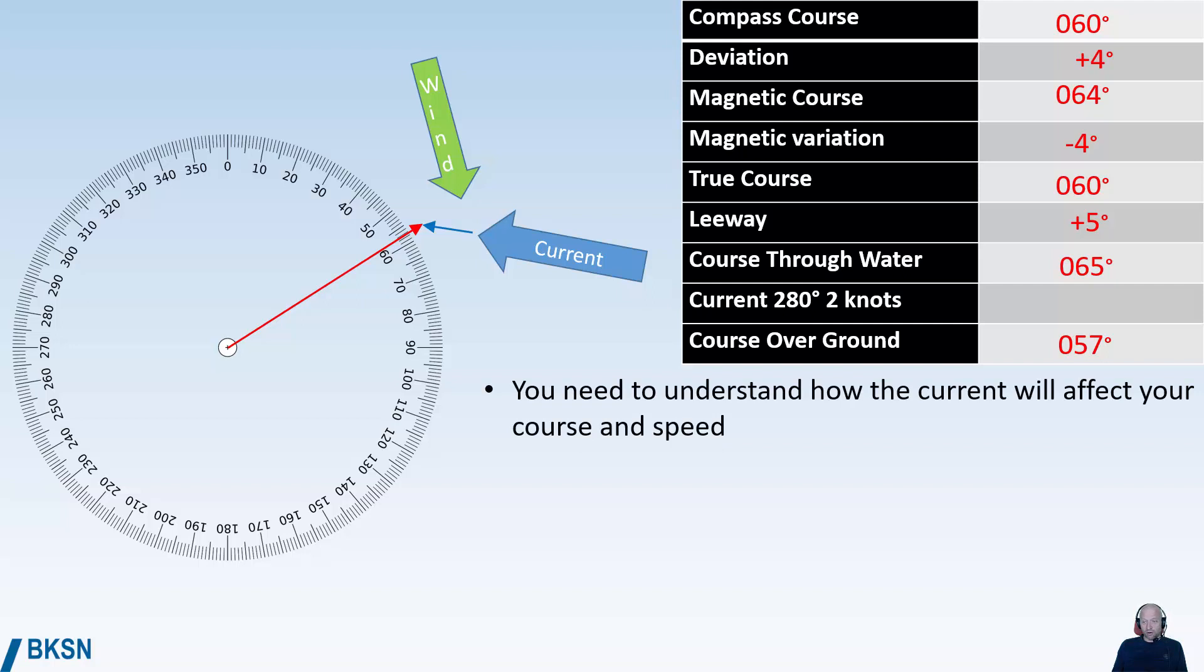You need to understand how the current will affect your course and speed. Where the current is known, you can calculate how much you need to adjust your course to compensate the effect of the current. Even though we don't do these calculations, we need to understand how the current will affect us and how we can compensate.